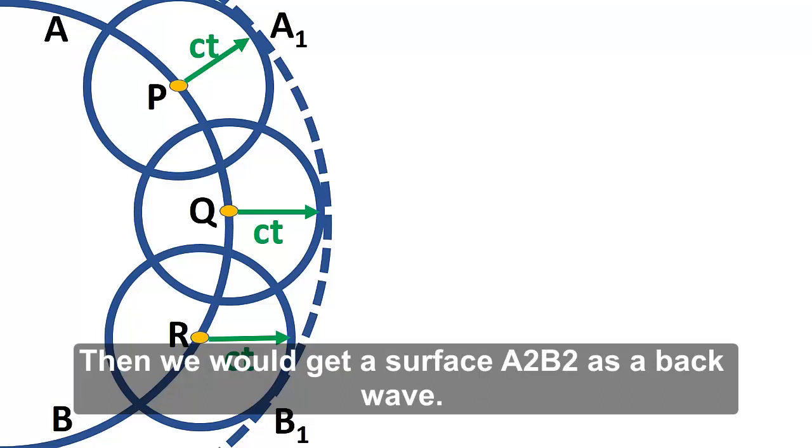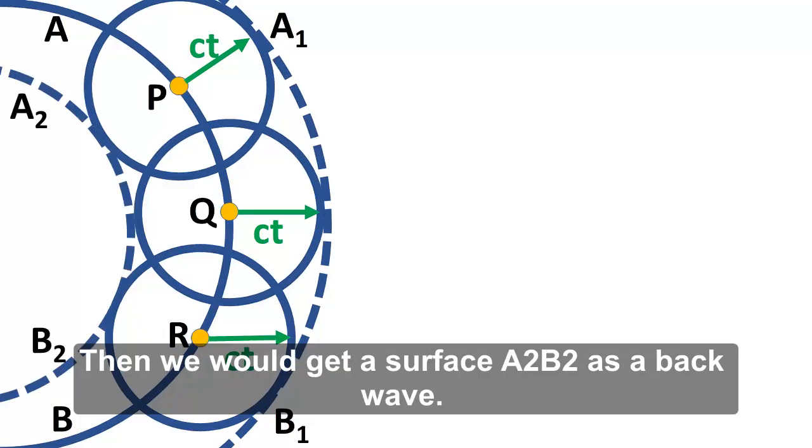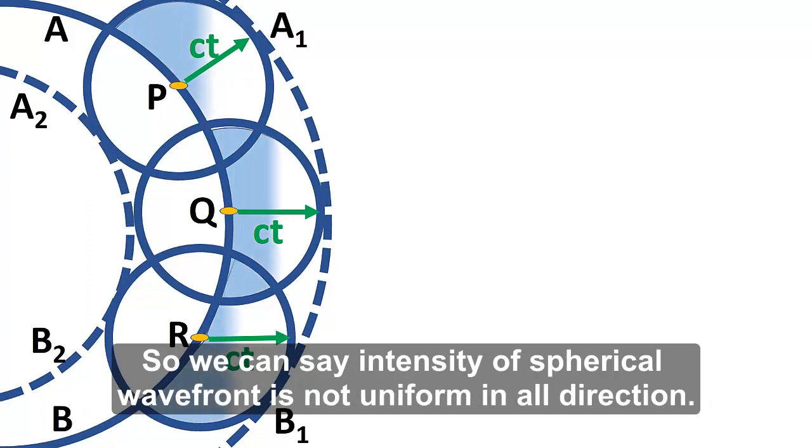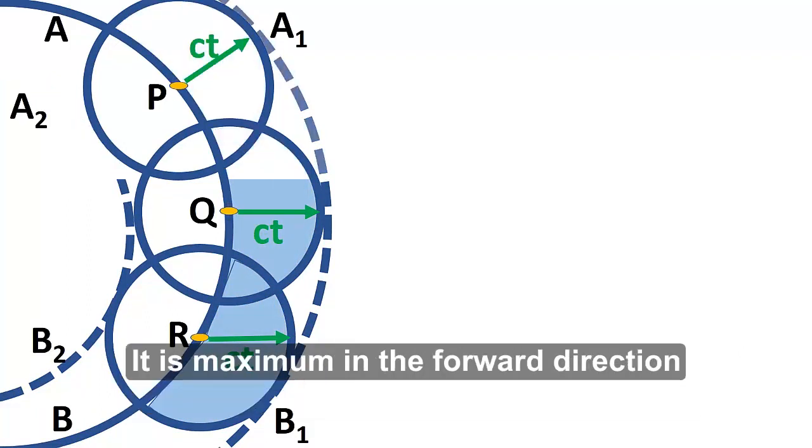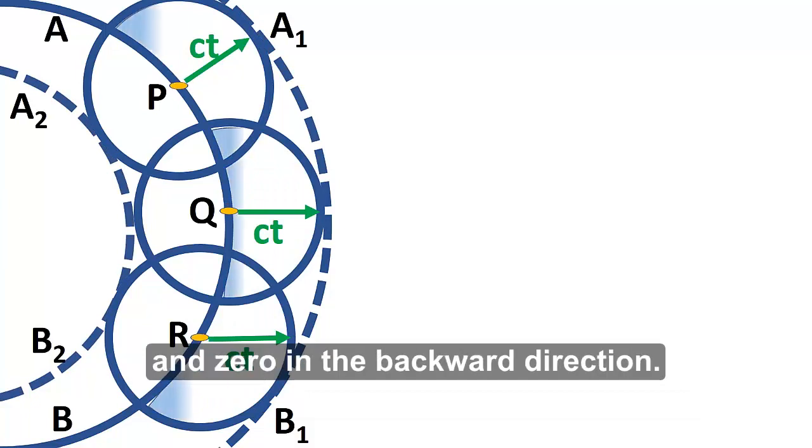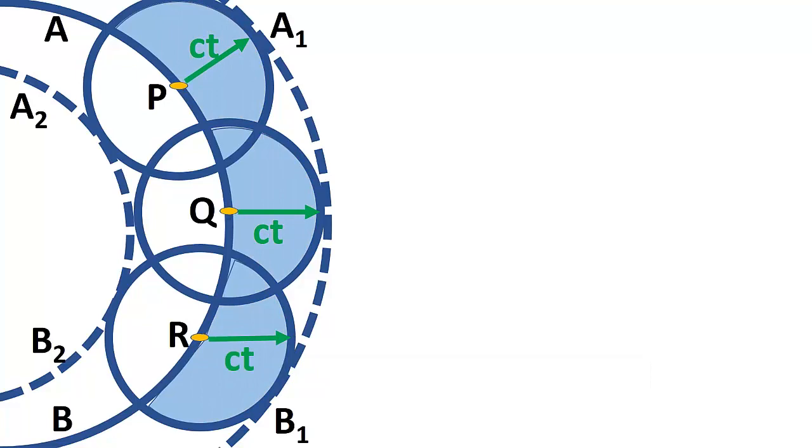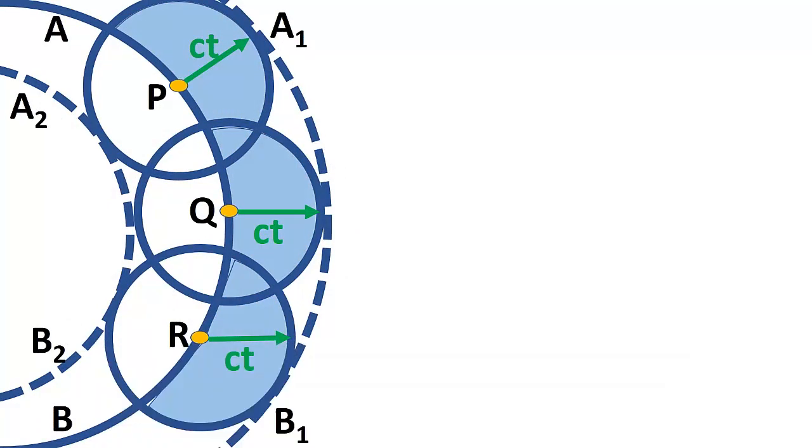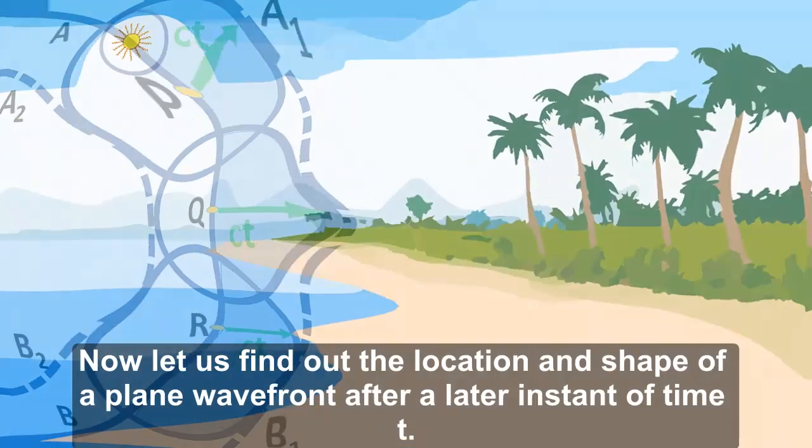Then you would get a surface A2, B2 as a back wave. But experimental results do not show any backward wavefront. So we can say that intensity of the spherical wavefront is not uniform in all directions. It is maximum in the forward direction and zero in the backward direction. Hence, the wavelet and the wave are always directed towards the forward direction.